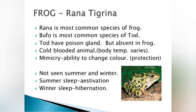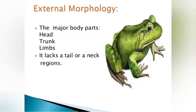Toads have poison glands, which are absent in frogs. Frogs are cold-blooded, meaning their body temperature varies. They have the ability to change color, which is known as mimicry. Summer sleep is called estivation and winter sleep is called hibernation.